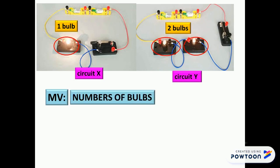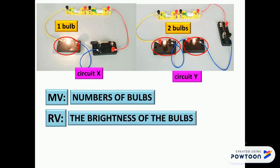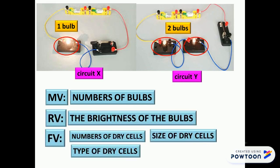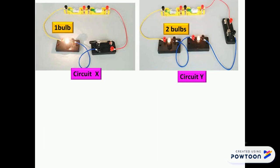And the responding variable is the brightness of the bulbs, while the fixed variables are the number of dry cells, the size of dry cells, the type of dry cells, and the size of bulbs.